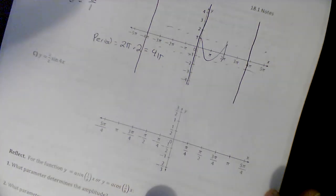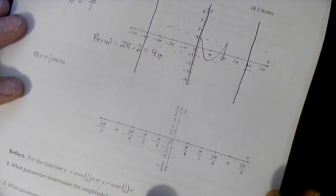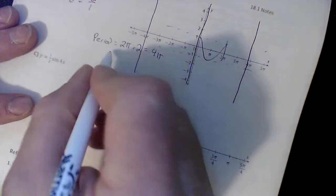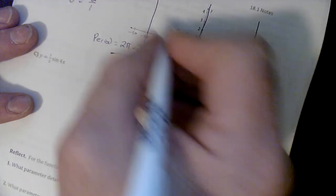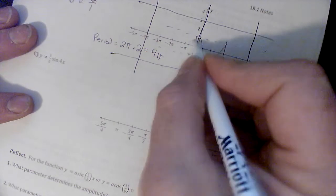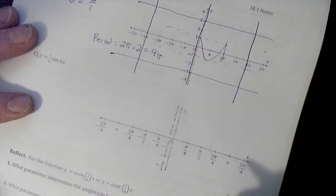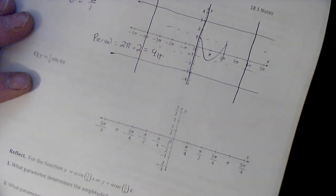Now it takes a full 4π to finish one period of this graph. Our stretch value is now 3, so I'm going to show you it's been stretched down from one to three, it's been stretched up from one to three - I should have said negative one to three.